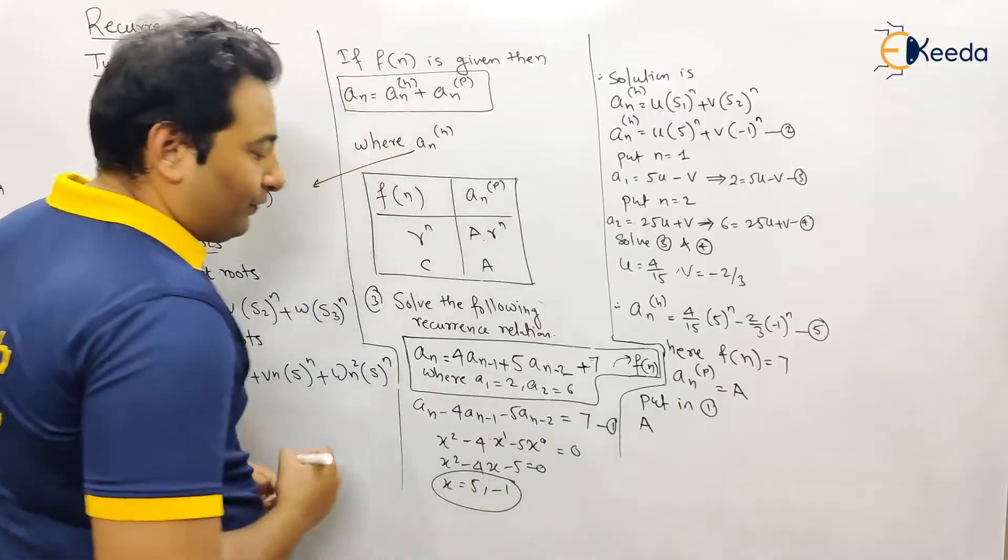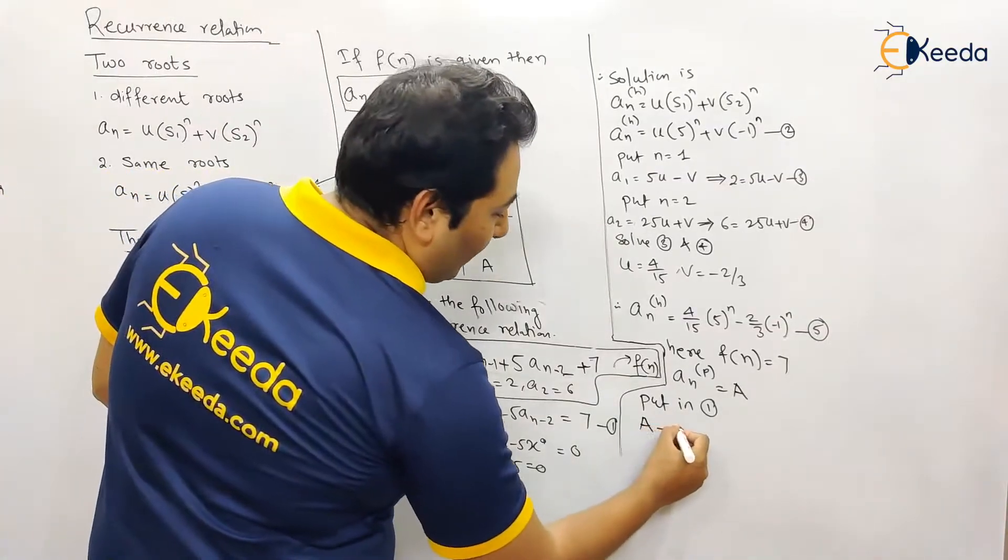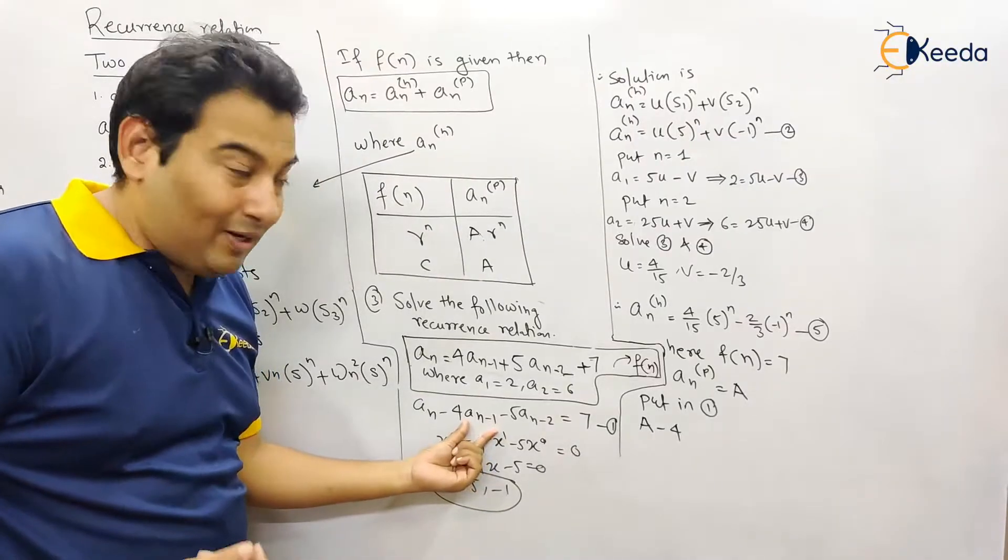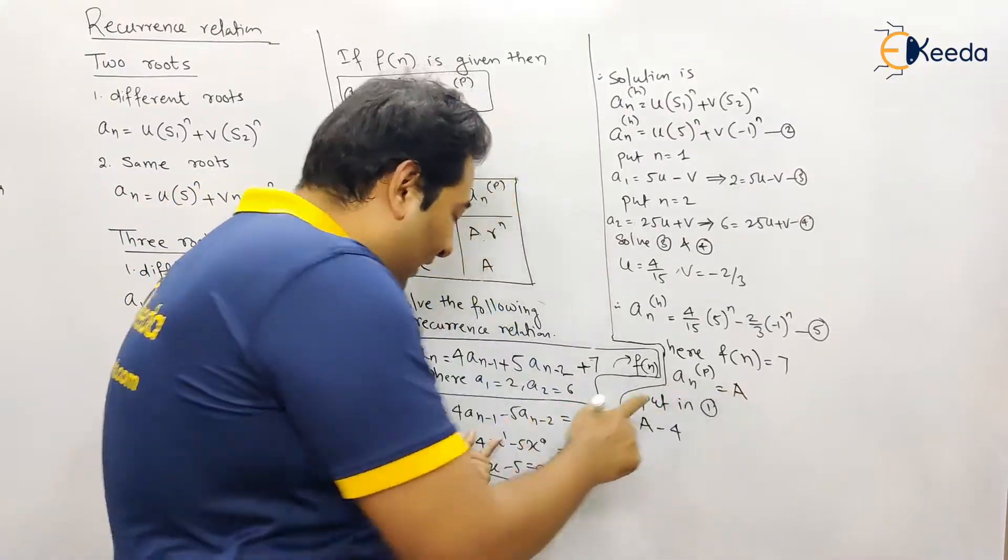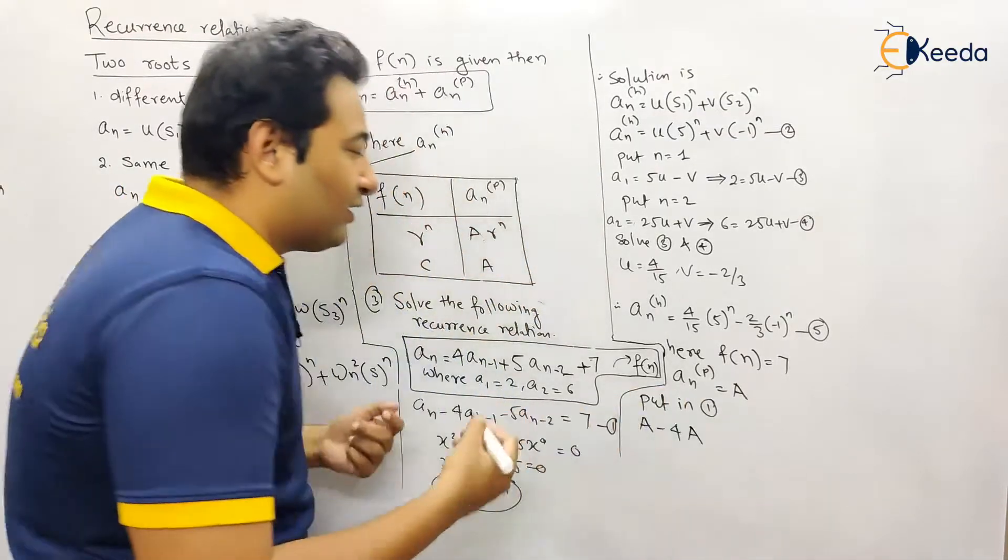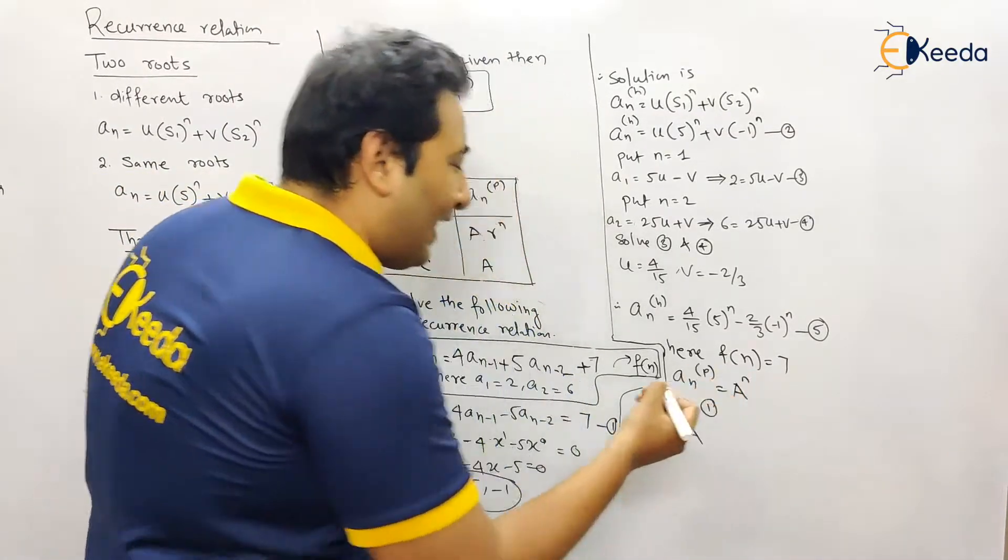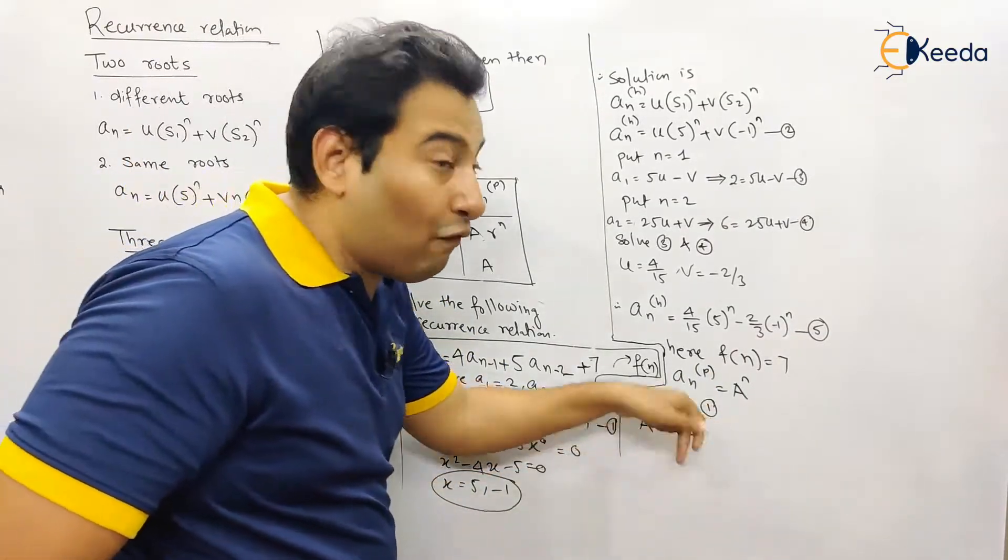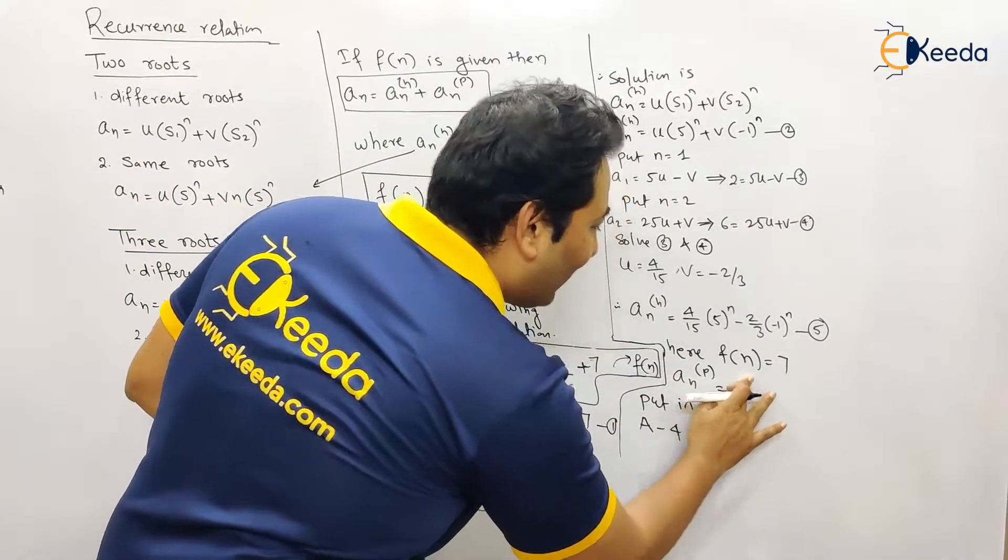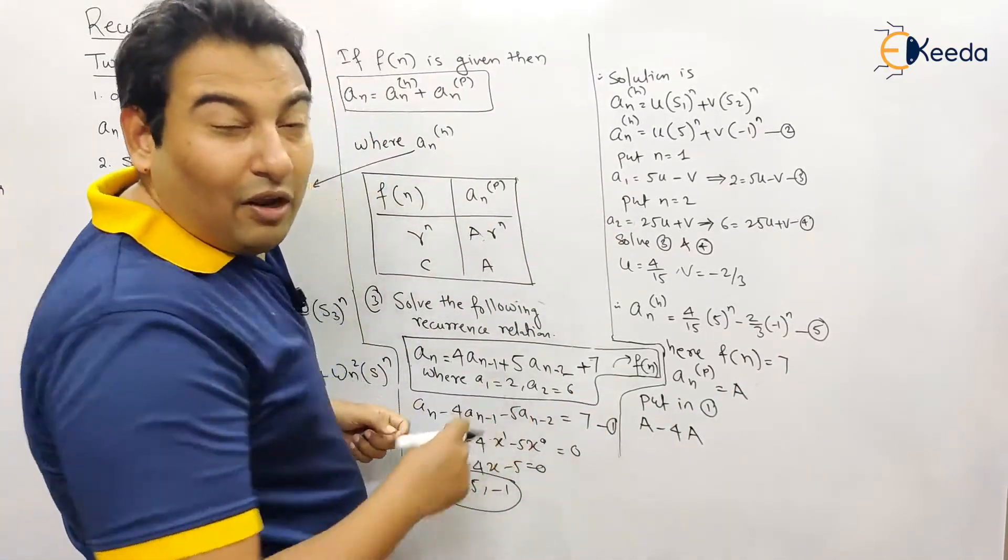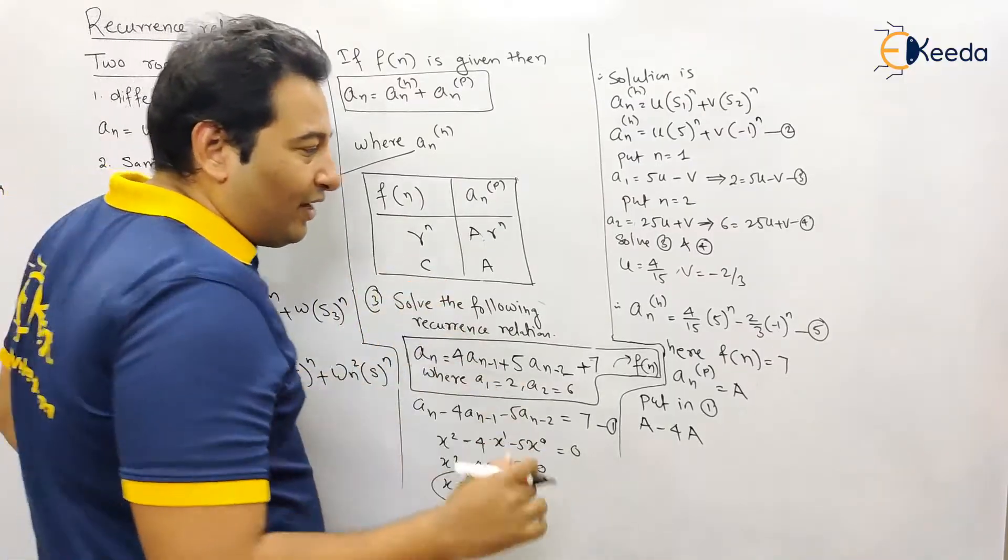So this is a, next minus 4a. What about a(n-1)? See, a(n) is a, so a(n-1) will still be a. Suppose if there is n, then a(n) will become a raised to n, a(n-1) will become a raised to n-1. But there is no n, it's a constant term, so whether it is a(n), a(n-1), or a(n-2), it will remain a only.